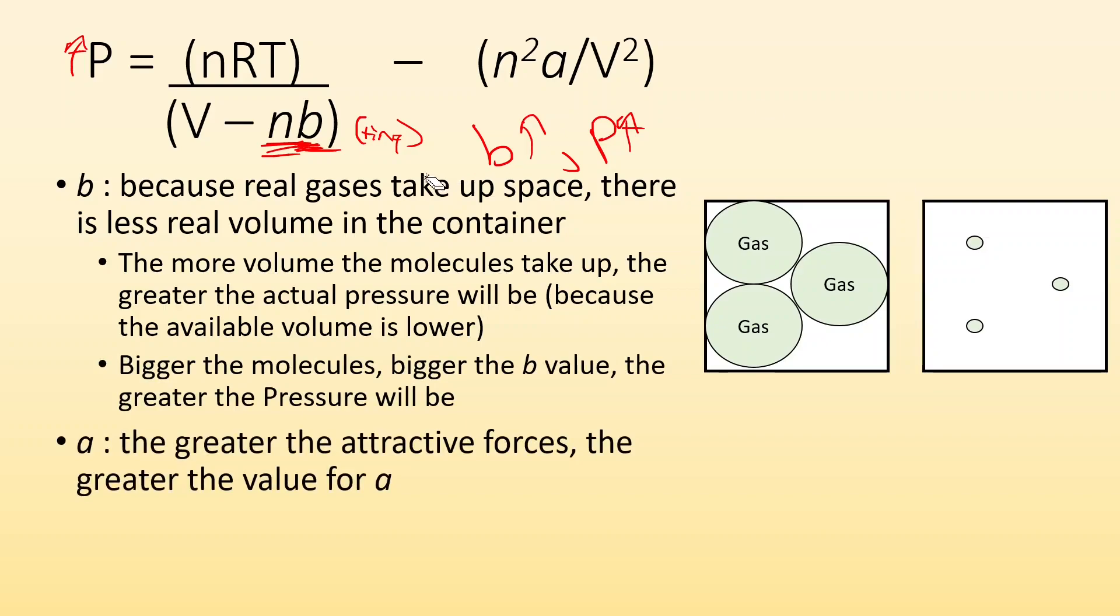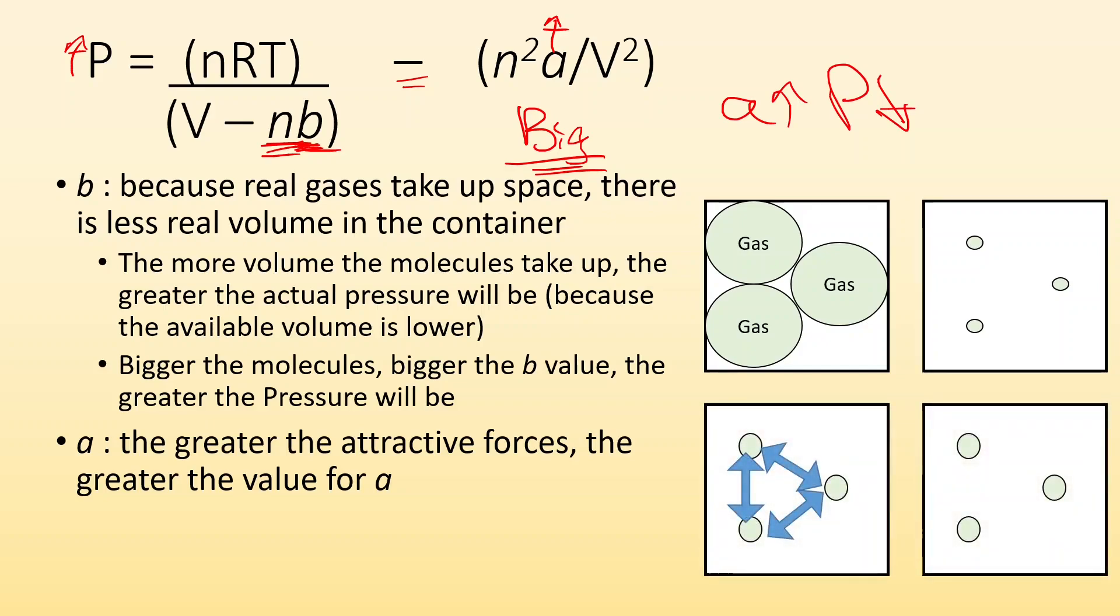And then a, let's see what happens when we mess with our values for a. A is accounting for the attractive forces between the gas particles. Let's say we had a really big value for a. While we're doing pressure, some number minus, a is in the numerator. So if it's really, really big, we're going to end up with a bigger value. And when we are subtracting it, the pressure is going to decrease, which makes sense with what we were saying. As the attraction increases, the pressure those particles are going to exert is less. Greater the attraction, lower the pressure.